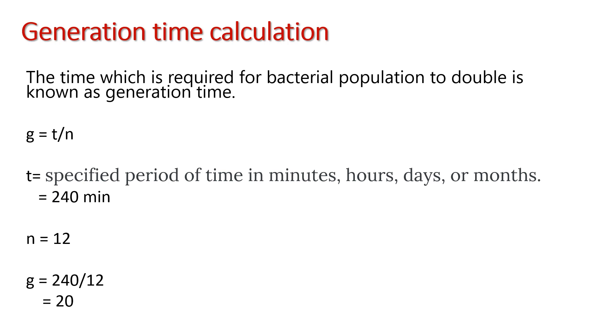Generation time calculation: The time which is required for bacterial population to double is known as generation time. The formula is G equals T by n. Here, T is the specified period of time in minutes, hours, days, or months. Here, T is 240 minutes, small n is 12. So 240 divided by 12 is 20. So generation time is 20 minutes.